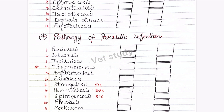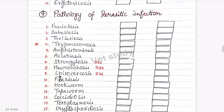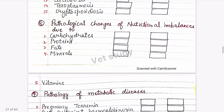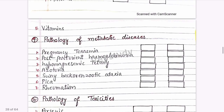For parasitic pathology, long questions are unlikely since parasitology is a separate subject. Maximum 4-mark questions on main parasites like Psoroptes, Babesia, Theileria, and Trypanosoma. In nutritional imbalance, there can also be long questions.